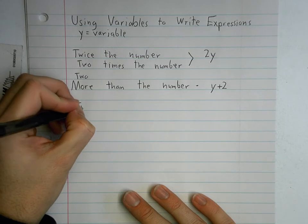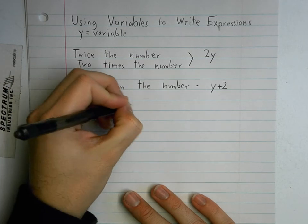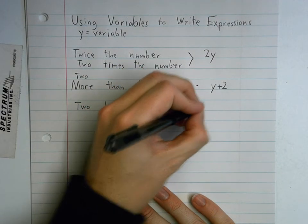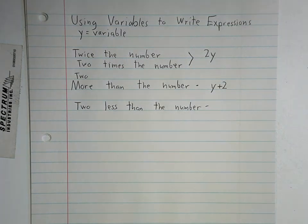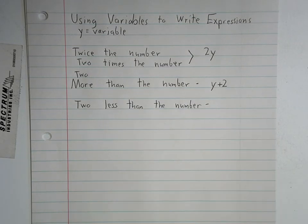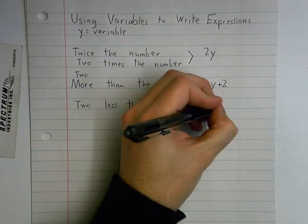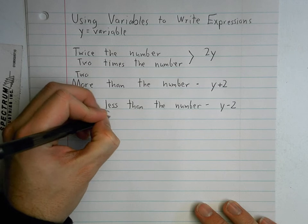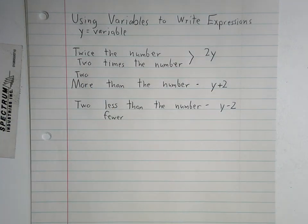What about two less than the number? What's that going to be? I want you all to tell it to me. Don't yell it to me. Just tell it to me when I count to three. One, two, three. Subtraction. That's true. But tell me what my expression should say on three. One, two, three. Y minus two. That's right. Y minus two. Because that makes it fewer. Two fewer than. So two less than. I could also say two fewer than the number.